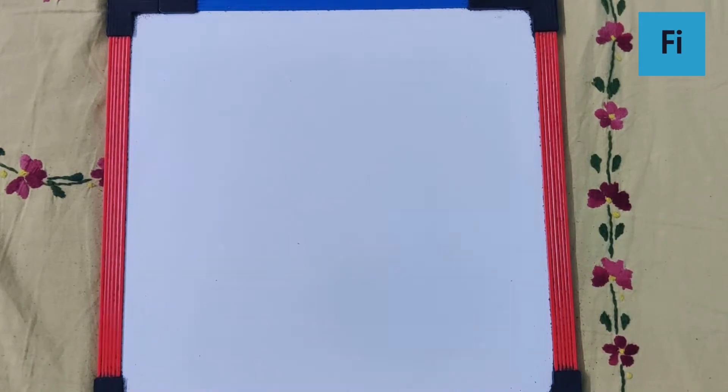The question says when a picture drawn on paper is seen through a slab of a transparent material of thickness 5 cm, it appears to be raised by 1.5 cm.